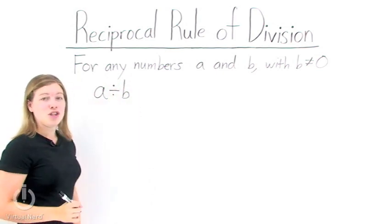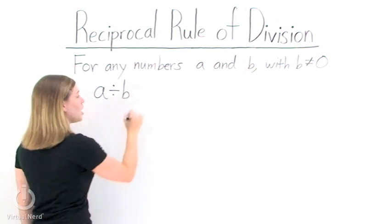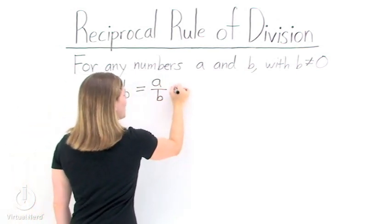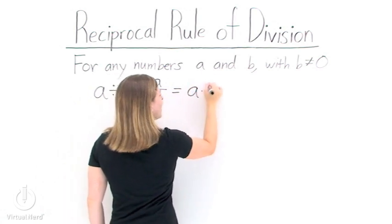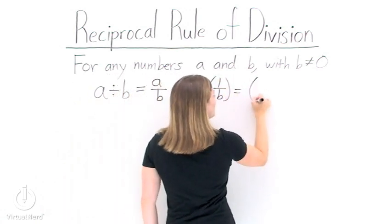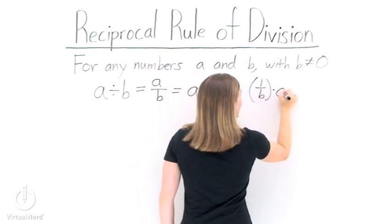Now, the reciprocal rule of division allows us to show this division a couple of different ways. We can now write it as a over b, or a times 1 over b. And lastly, we can rewrite it as 1 over b times a.